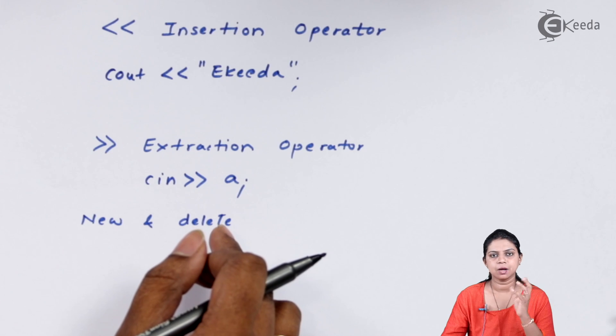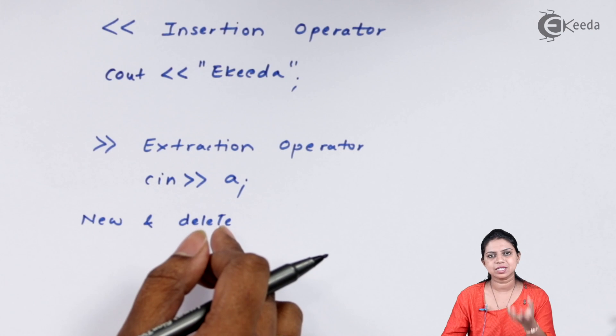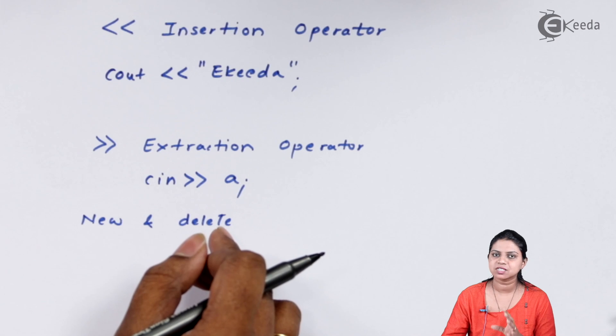In that case, your compiler has to extract the value from the keyboard. For that, we use the extraction operator.